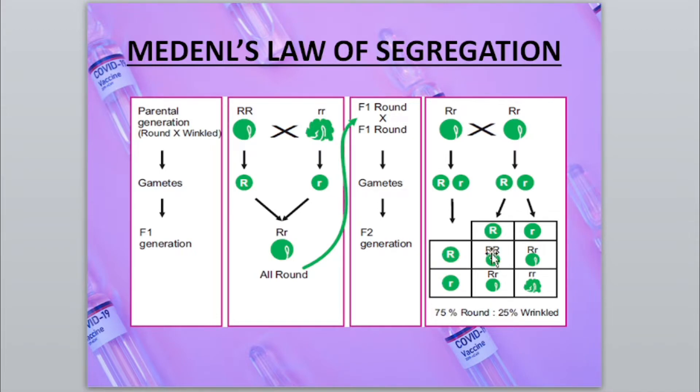Capital R with capital R gives round — both are dominant. Capital R with small r also gives round. Small r with capital R also gives round. So three of the four combinations are round.